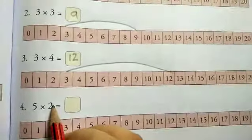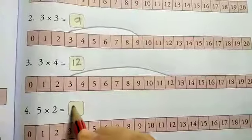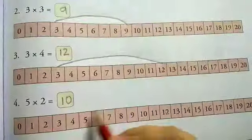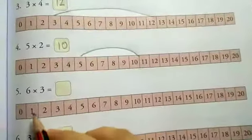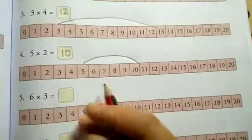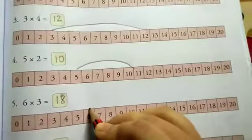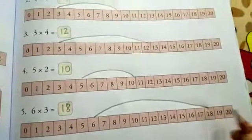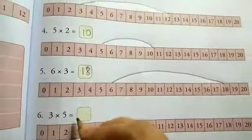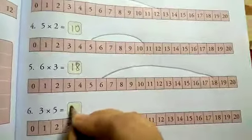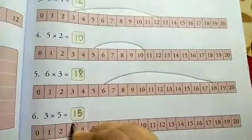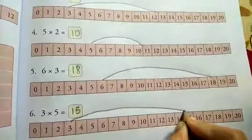5 into 2, 5 times 2 is 10. 6 into 3, 6 into 3: 18.